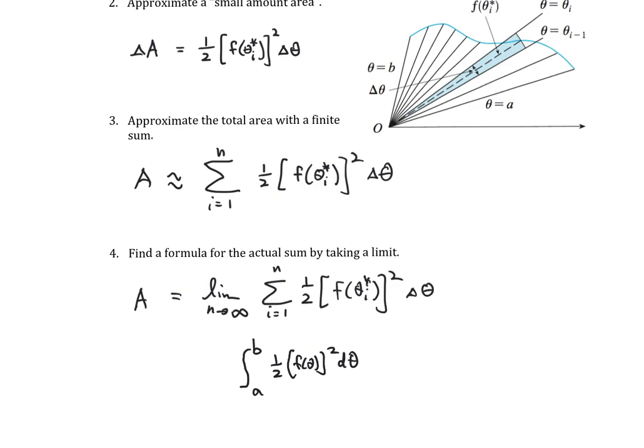If you wanted to, you could also write this as the integral from a to b of one half r squared d theta, because our f of theta is really the same thing as r. This is our area. I am going to highlight this formula. This is something we should know and memorize.